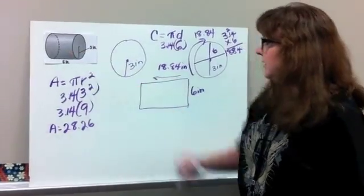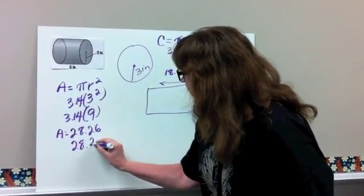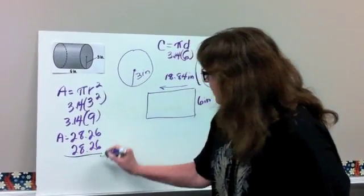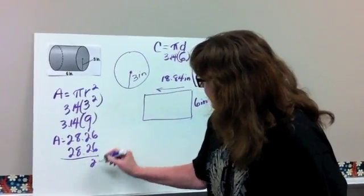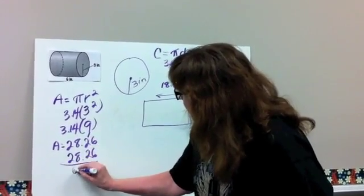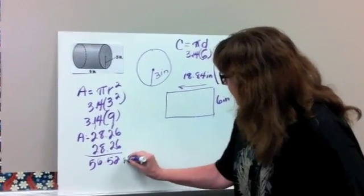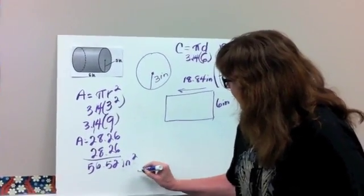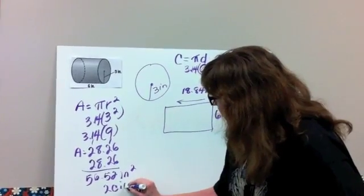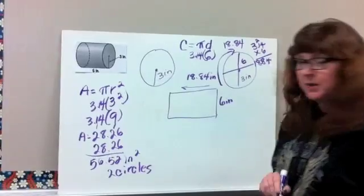Well, we've got two circles here. So we need to add another circle there. So we'll add that. So two circles, the area is 56.52 inches squared for our two circles.